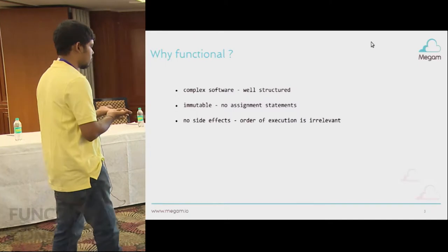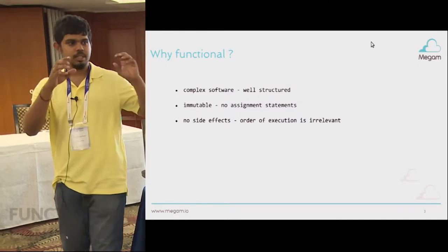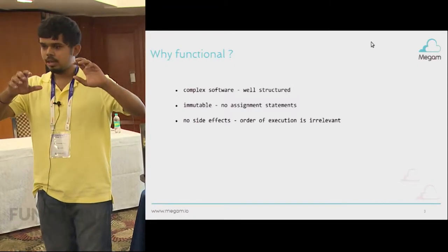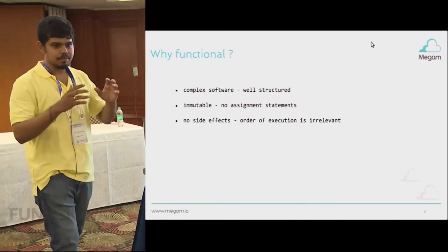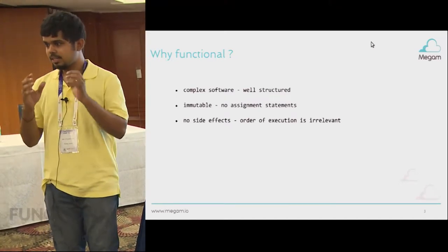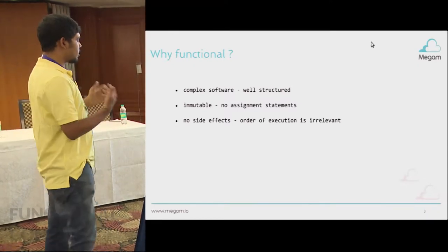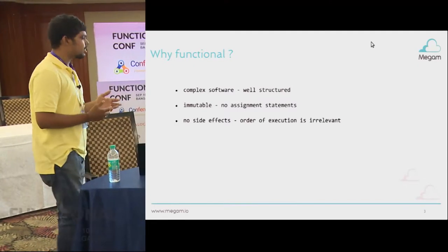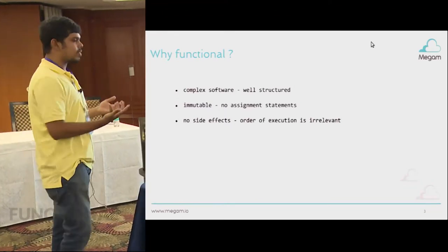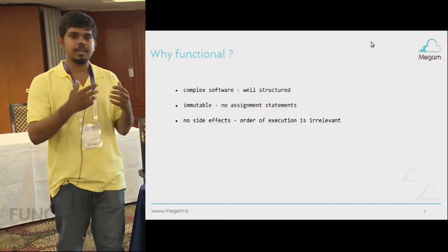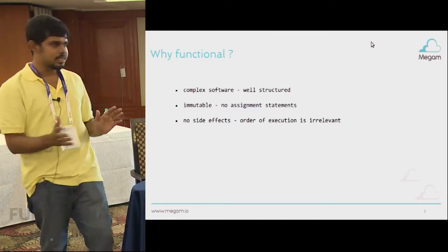What do you mean by side effects? Say there's a function — it takes in a type A, it gives a result B, that's it. It doesn't do anything else. Takes a type A, gives a type B. What happens is that you won't have any side effects. And there are no order of execution — it's irrelevant. You could do things in whichever order you want; that particular function is going to do one thing.